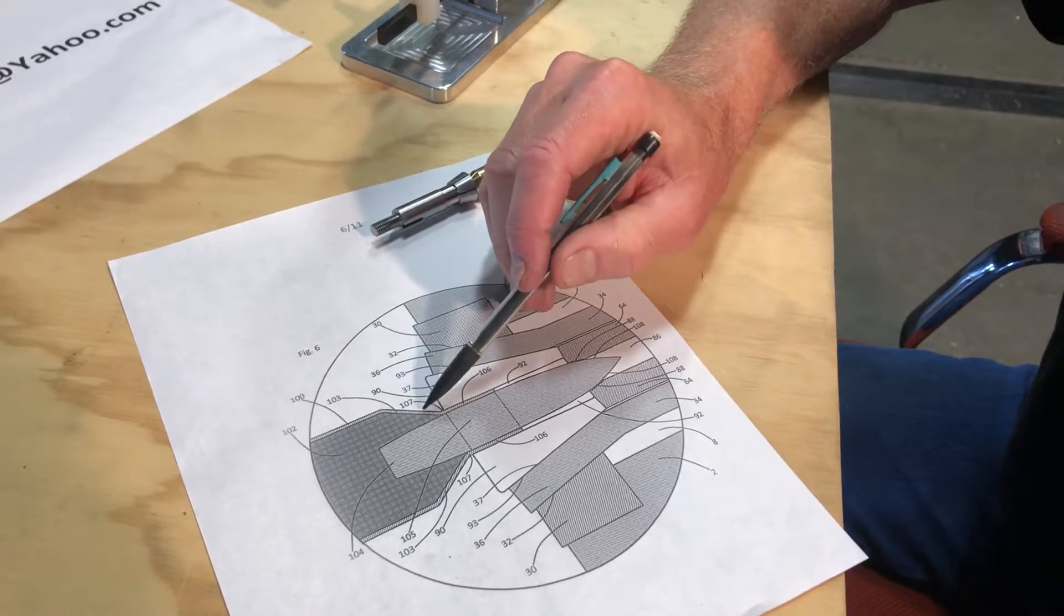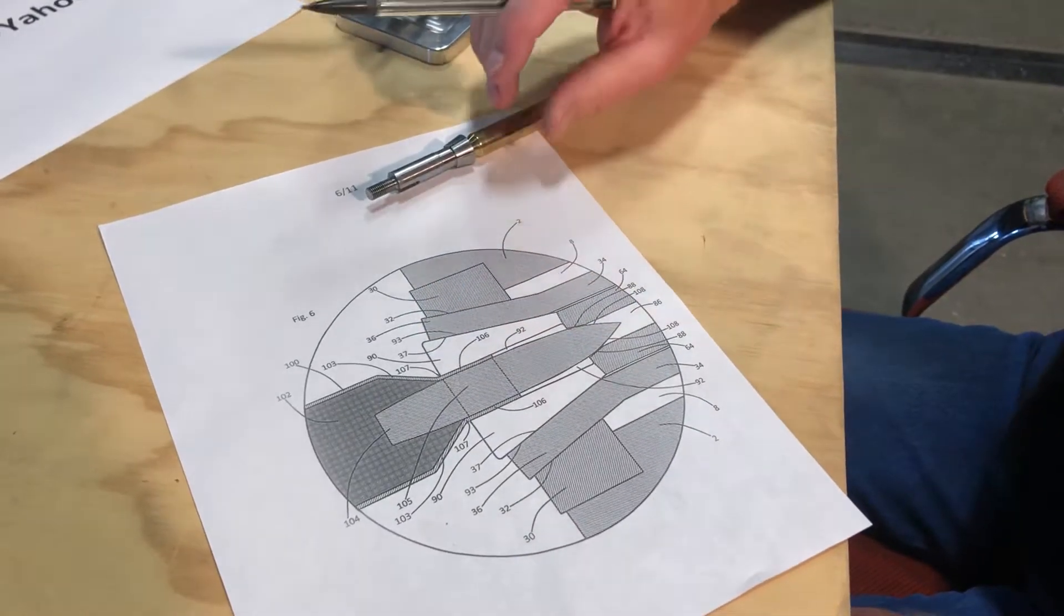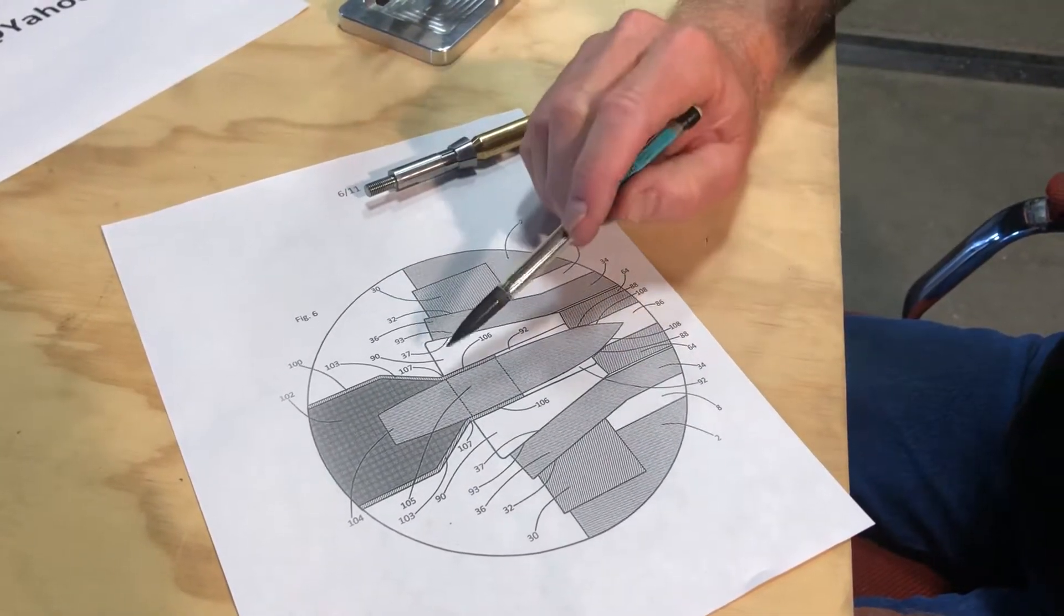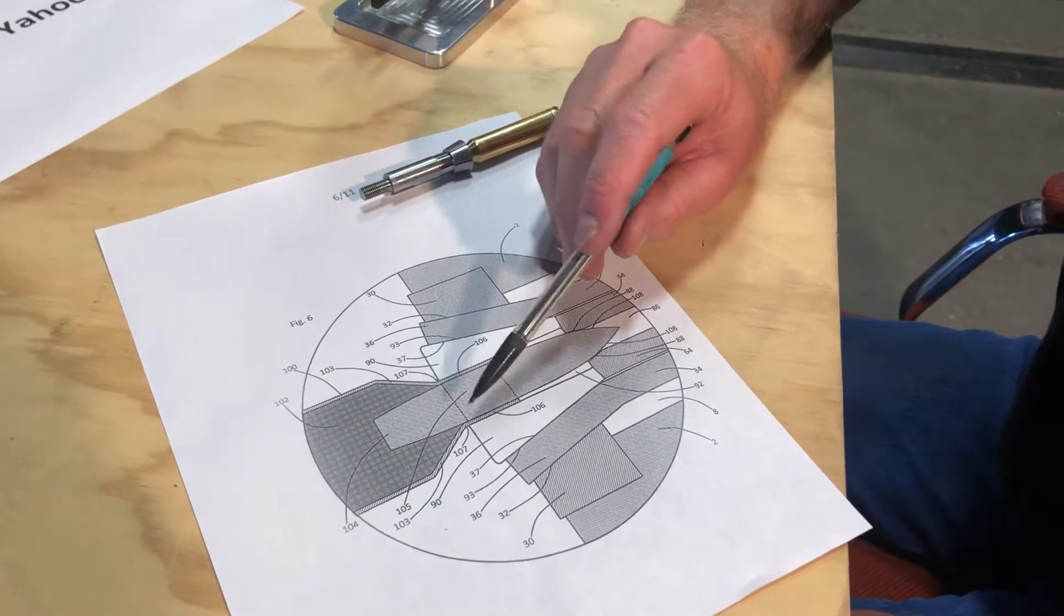Very seldom do you end up with a concentric cartridge, but it does happen. Once it's loaded in the machine, if you adjust it, you're adjusting the shoulder.